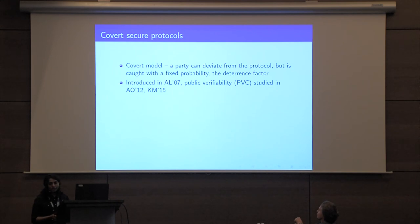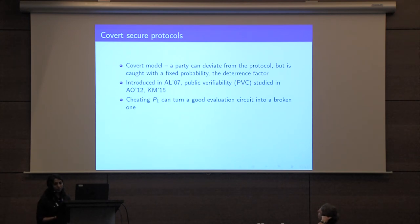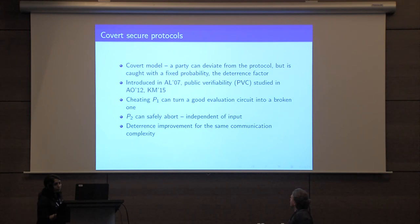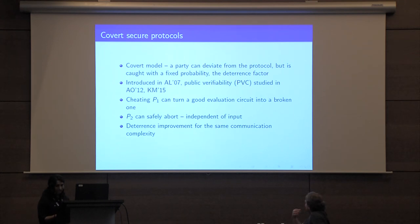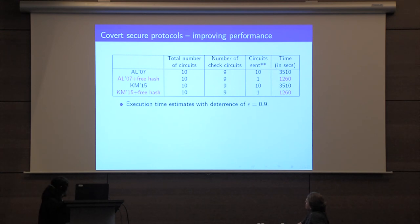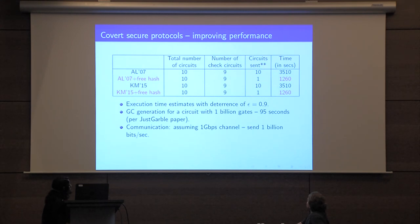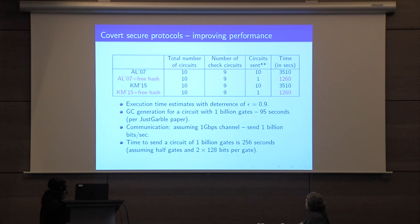It is safe for P2 to abort in protocols in the covert security model, where a party is allowed to deviate but is caught with a fixed probability called the deterrence factor. This model was introduced by Orman and Lindell and studied in subsequent works. In these protocols, a cheating P1 can already turn a good evaluation circuit into a broken one, and P2 can safely abort independently of his input. Using the free hash construction in covert-model protocols, we can improve the deterrence probability for the same communication complexity and get an improvement in total execution time for the same deterrence. Assuming generating a garbled circuit takes 95 seconds per billion-gate circuit on a 1 Gbps channel, we see significant improvement when using our free hash construction.